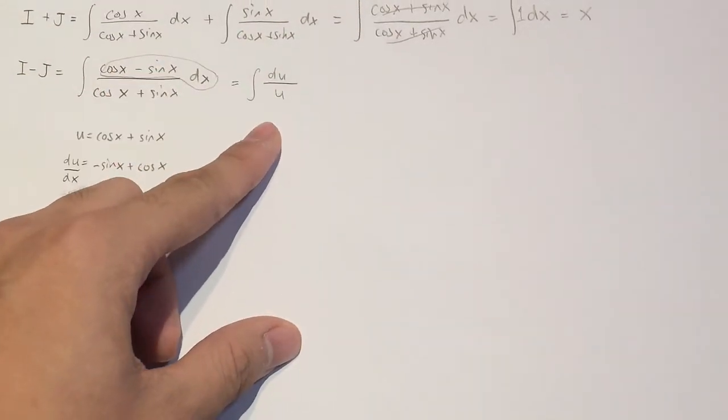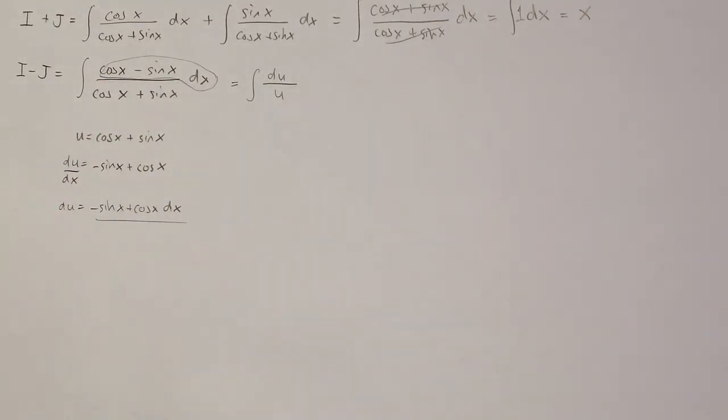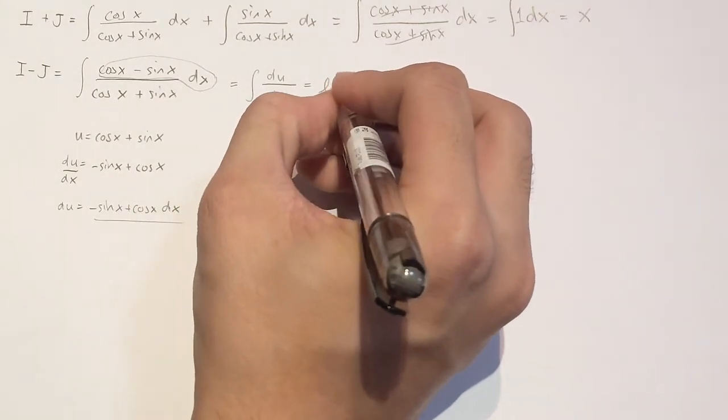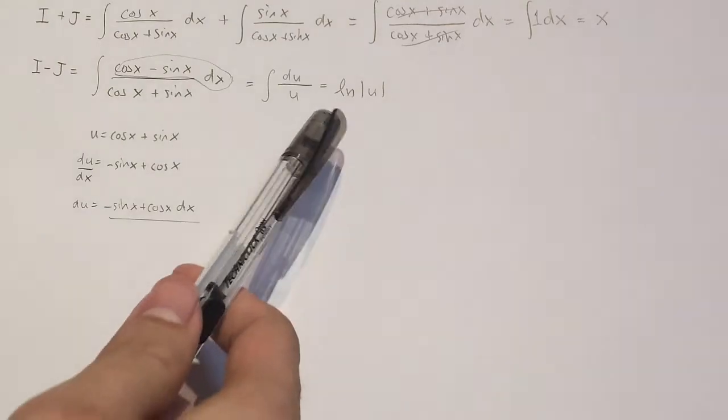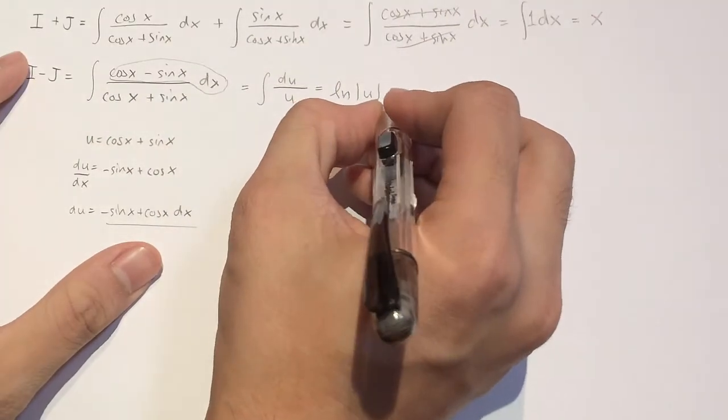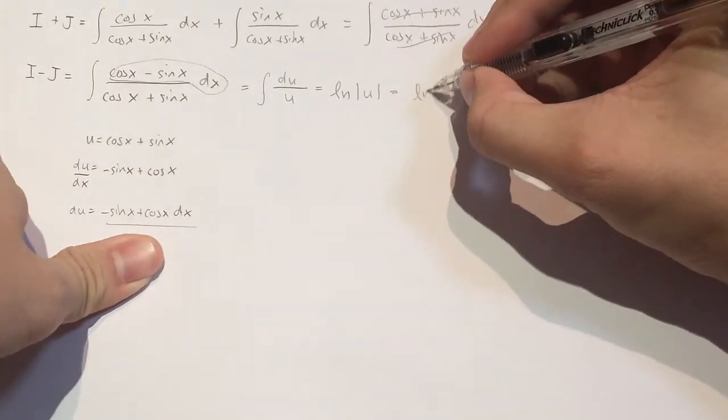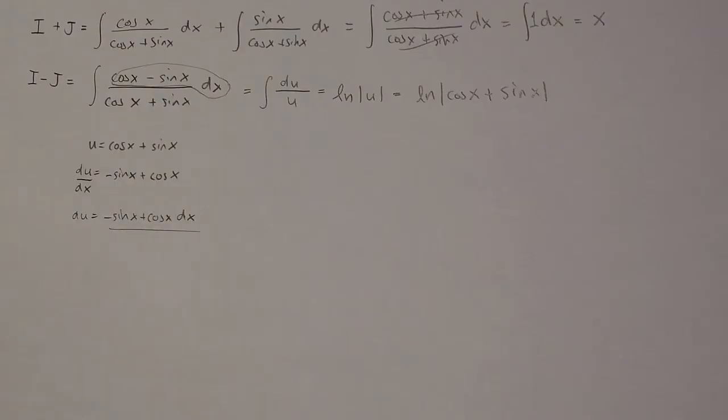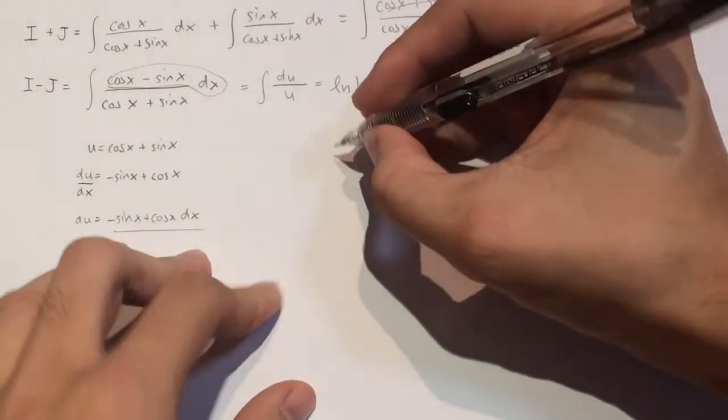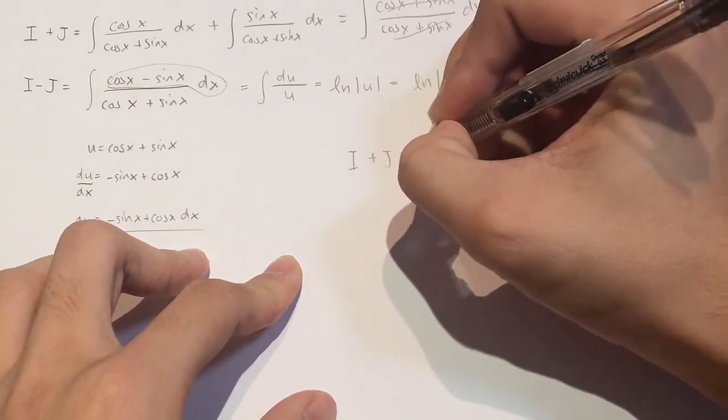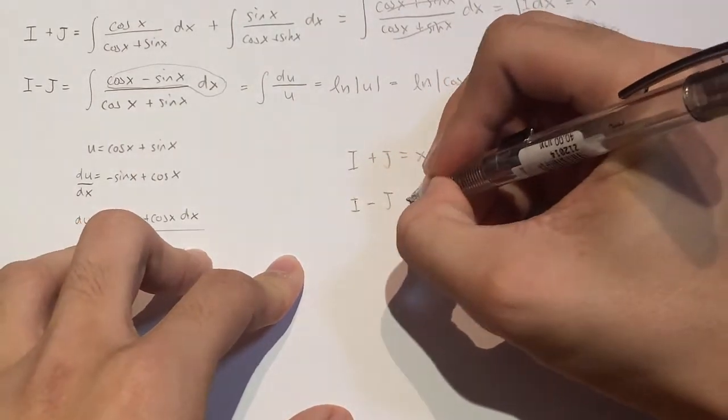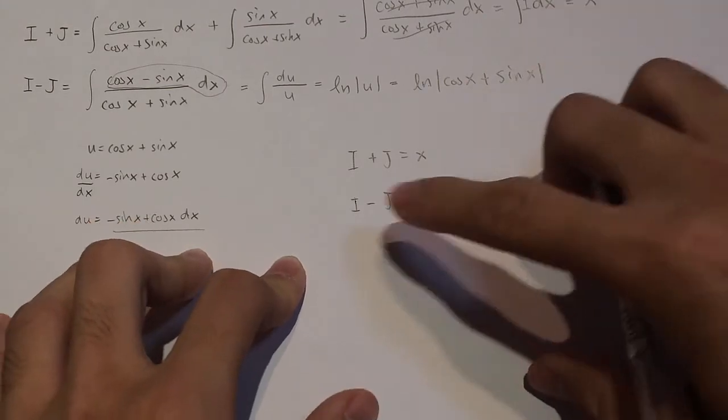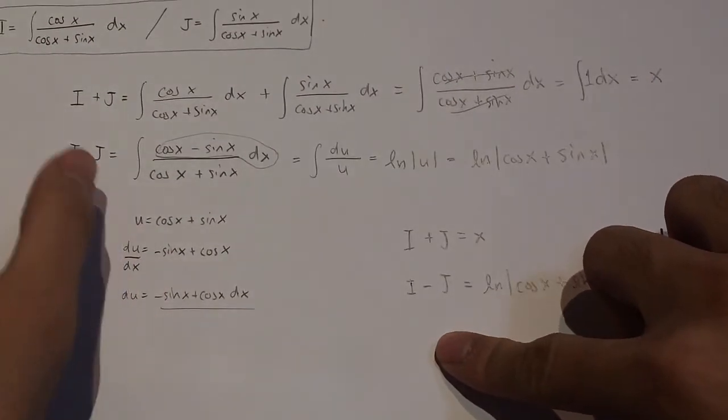Now this, if you've done calculus before, you realize that this would just come out as a natural log. So this would give you the natural log of u. But because u is cos x plus sin x, you could change this into saying it equals to natural log of cos x plus sin x. And so now, all of that work, what you've come out with is you know that i plus j equals x, and i minus j equals to the natural log of cos x plus sin x, where i and j is what we defined earlier up there.